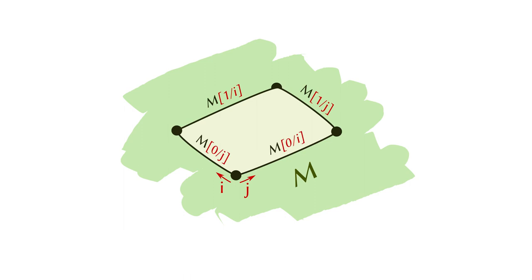If you substitute 1 for i, then that will give you the line in the back, because that is the 1-direction in the i dimension. Similarly, if you substitute 1 for j, then you can have the one end of the square along the j direction. Similarly, you can have four sides. In addition to these four substitutions, you can also have the diagonal substitution, which will give you the diagonal across the square. So if you substitute i for j, that means you're identifying the dimensions i and j, and that will give you the diagonal.